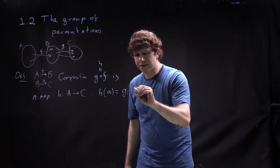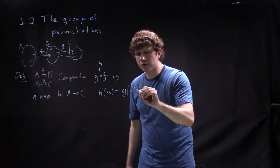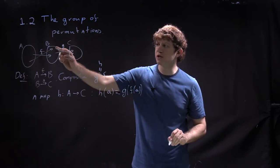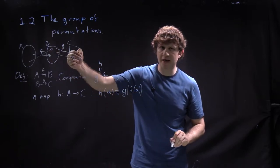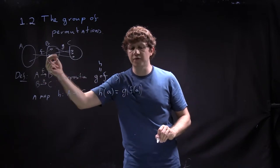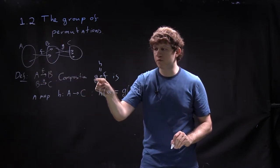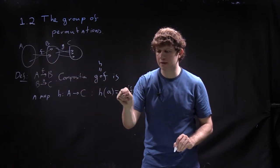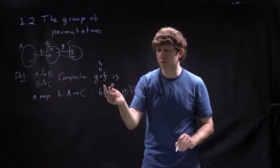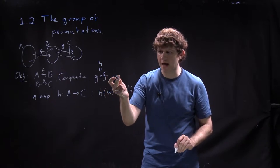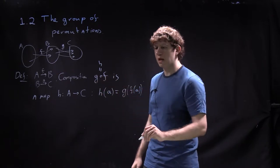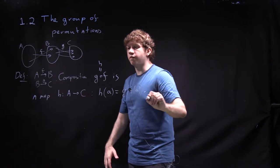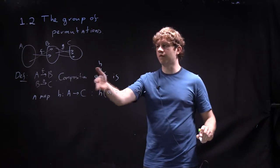And this is why the notation goes this way. Though G seems to be the second one and F the first one, I write them first as G then F, because I first apply F to something and then G. So this is the definition of composition.